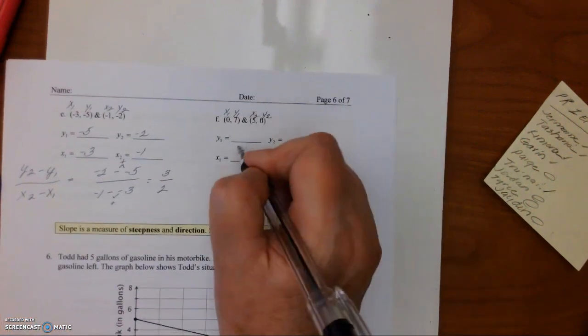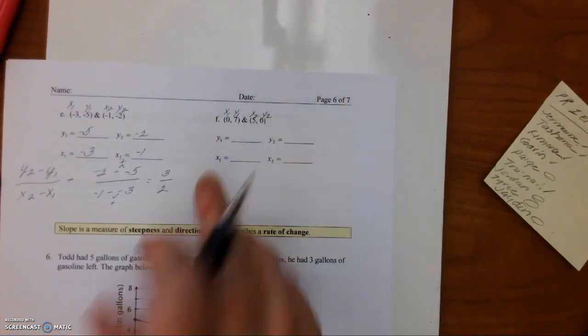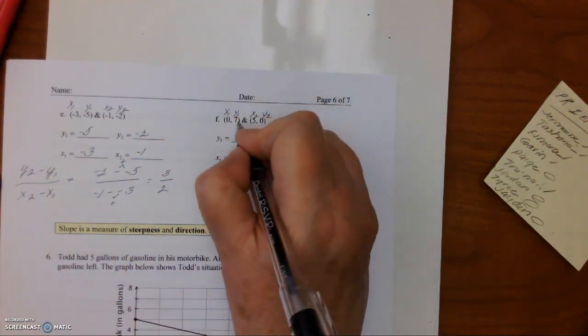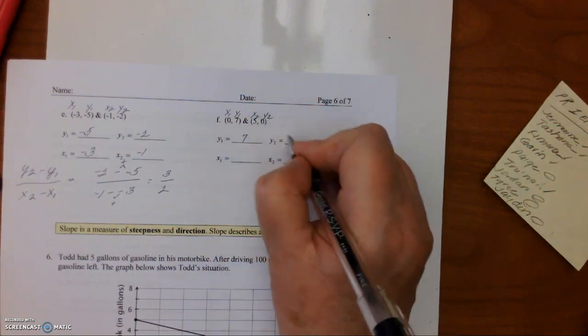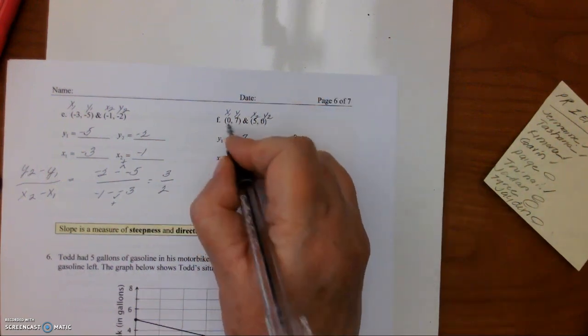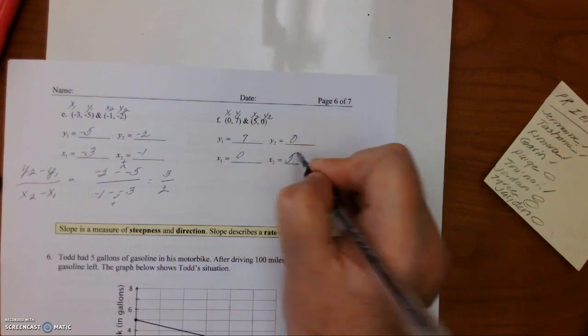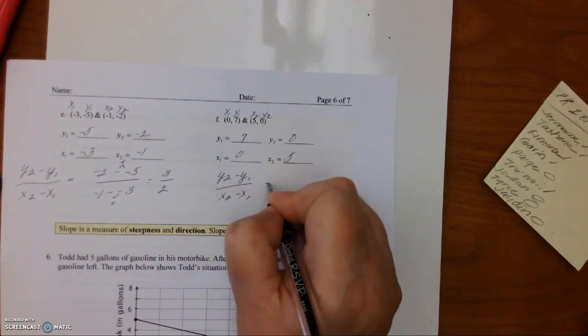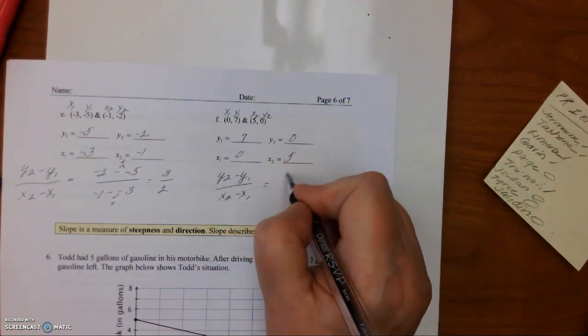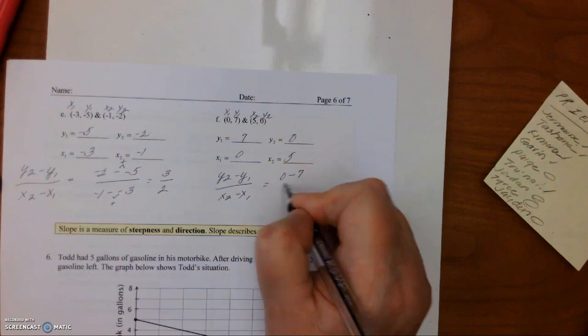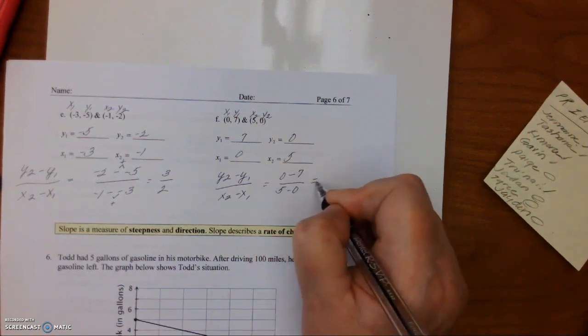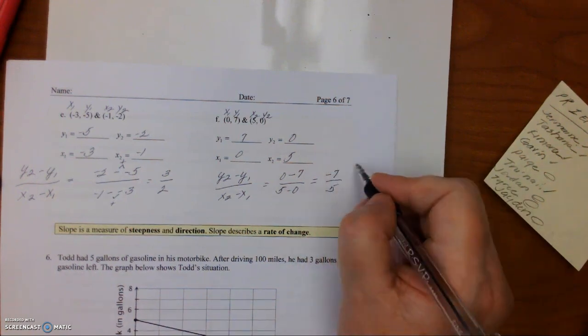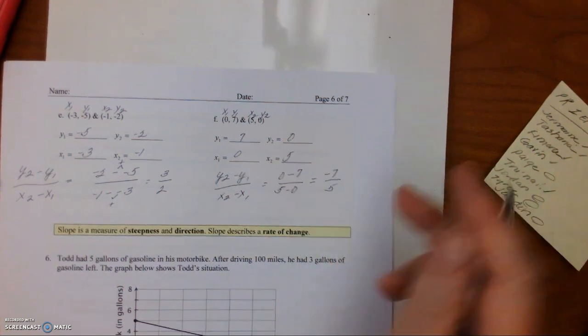And the last one we're going to do for the slope. So y1 is 7, y2 is 0, x1 is 0, x2 is 5. So (y2 minus y1) over (x2 minus x1) equals 0 minus 7 over 5 minus 0. So we have negative 7 over 5. So you go down 7 and over 5.